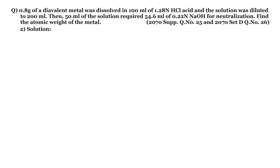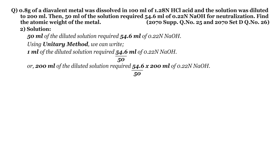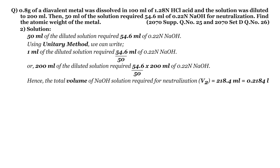Now let's solve using method number 2. We are given that 50 ml of the diluted solution required 54.6 ml of 0.22 N sodium hydroxide. Using the unitary method: 1 ml of diluted solution required 54.6/50 ml of 0.22 N sodium hydroxide. Since the solution was diluted to 200 ml, 200 ml of the solution required (54.6/50) × 200 ml of 0.22 N sodium hydroxide.